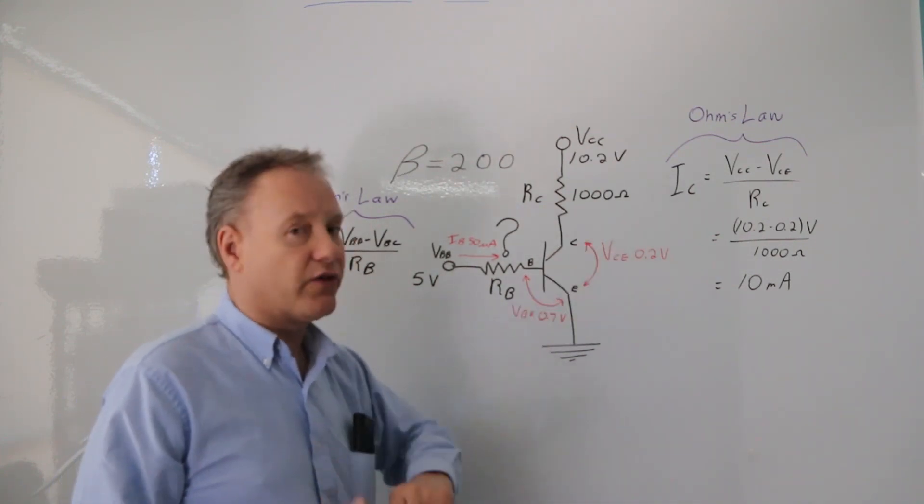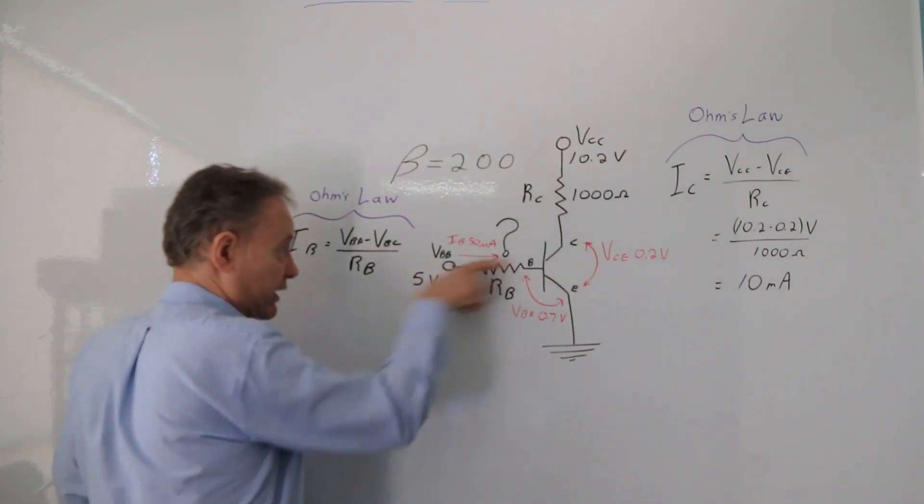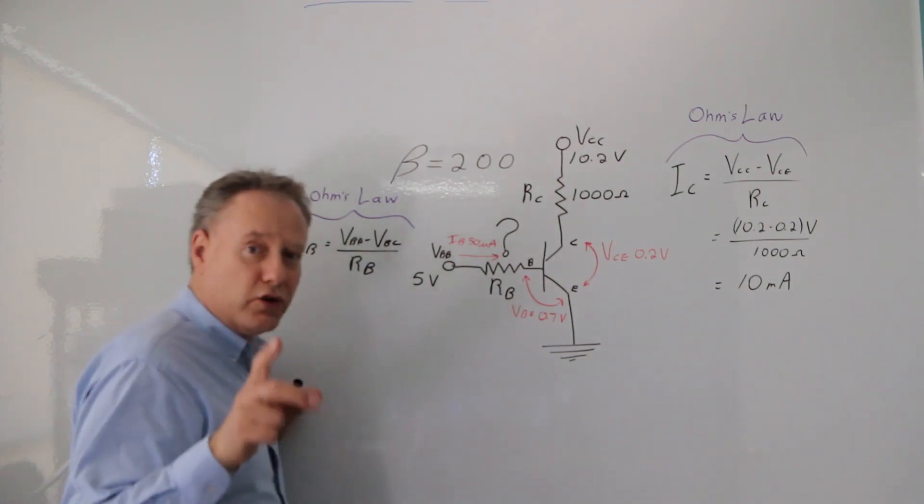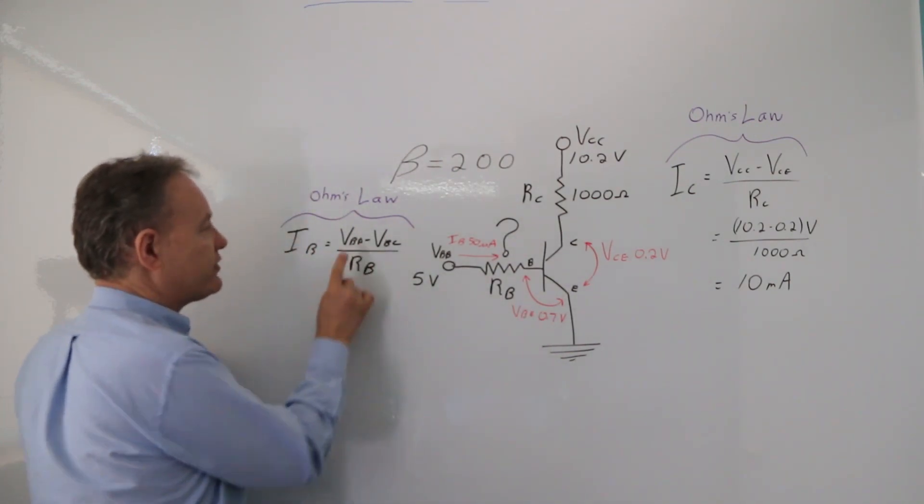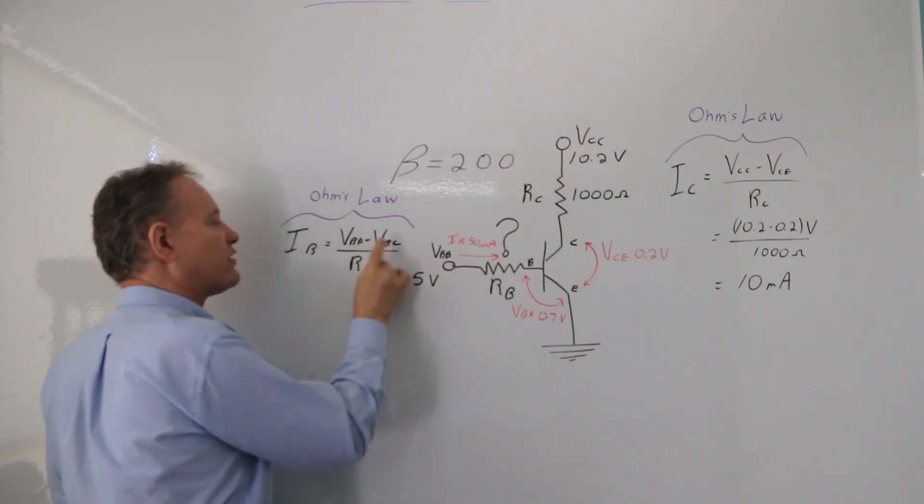If I go back and lean on Ohm's law like I did over here, I can use the same formula. If I wanted to calculate the current through there and I knew the resistance, I would say it's the voltage over the resistance. The current through this resistor is the voltage divided by the resistance.